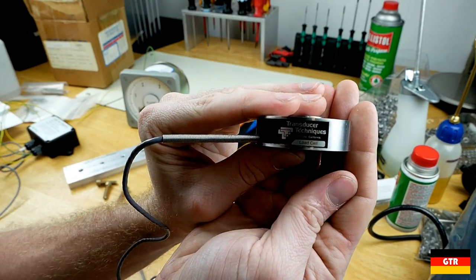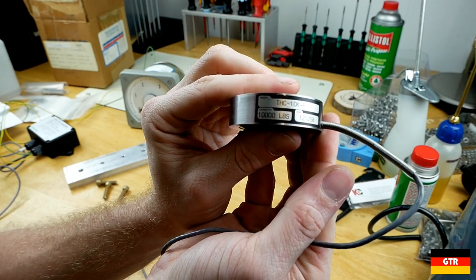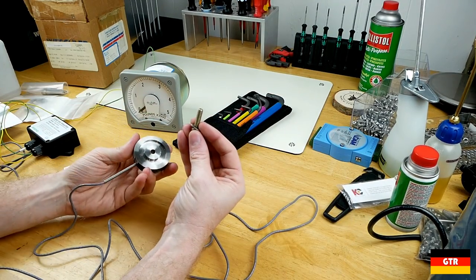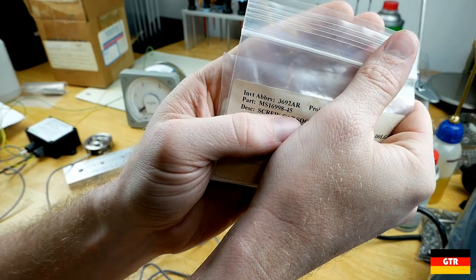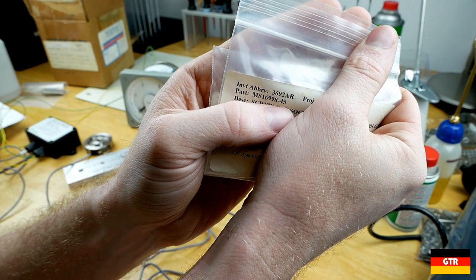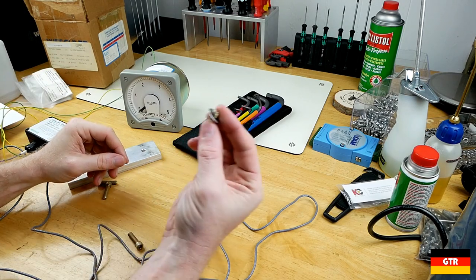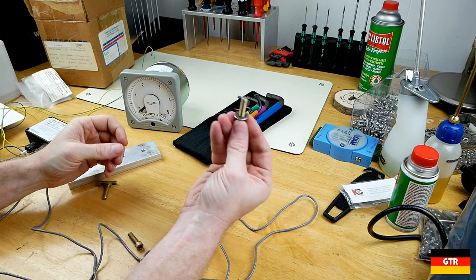So this load cell is from Transducer Techniques. There's the part number. It's a 10,000 pound load cell. I'm going to use a quarter inch bolt, quarter 28. And there's the part number for the socket cap screws I'm going to use. It's a mil spec socket cap screw, pretty much equivalent to a grade eight.